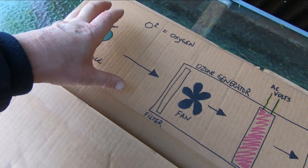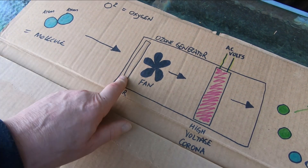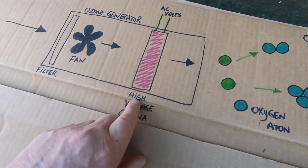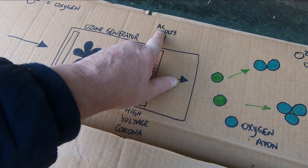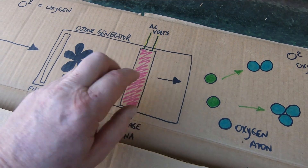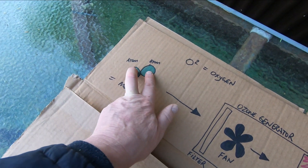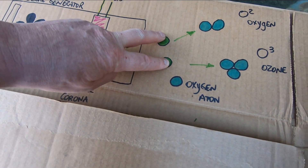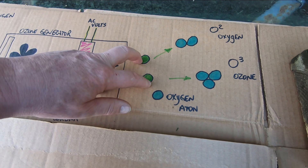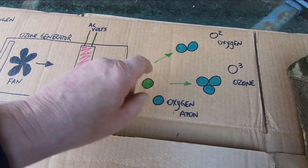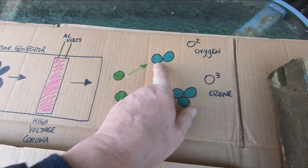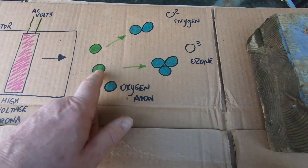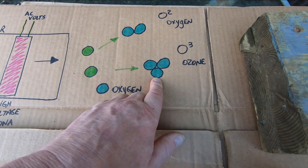Air is drawn into the back of the machine through a little filter membrane, and it's pushed through by a fan, and it gets passed through this high-voltage corona. Voltage is applied, and what it does is it splits the molecule so that individual atoms of oxygen are coming out. They immediately want to combine again — back into molecules. So oxygen is formed again immediately when two of these combine, but also ozone is formed, and that's when three atoms of oxygen combine.